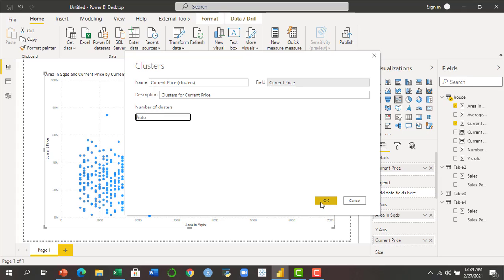If I click OK, the system will determine on the back end how many clusters could be made. But if you want to go with a specific number of clusters, write that number here. For example, for this specific visual I want four clusters, so I have mentioned four here and I will press OK.